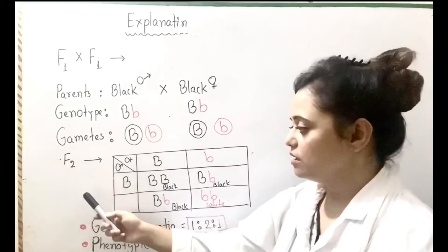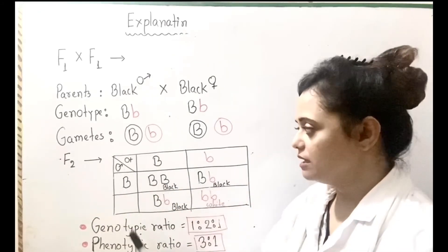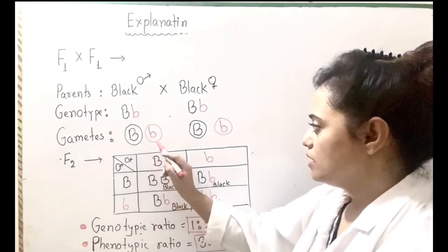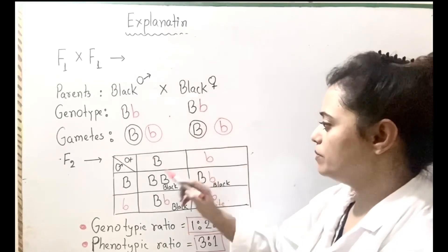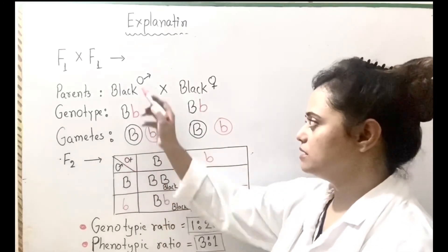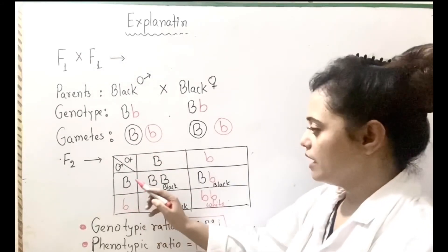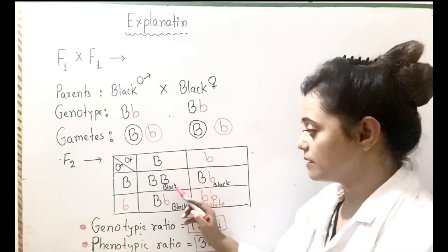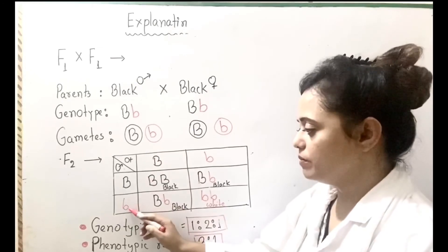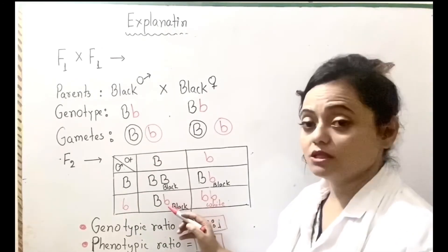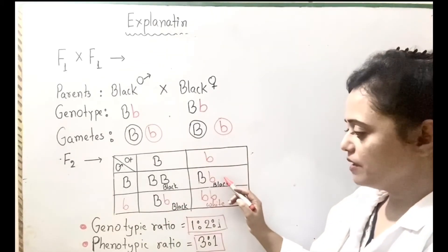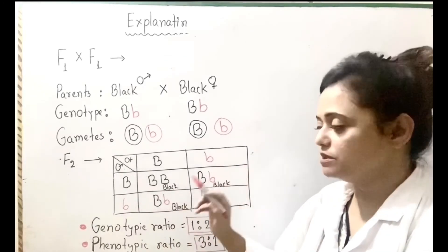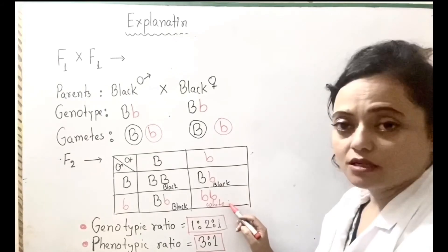During the F2 generation, draw a checkerboard like a Punnett square and put the gametes there. The female gametes are capital B and small b; the male gametes are capital B and small b. Crossing them: capital B capital B gives homozygous black; capital B small b gives heterozygous black; and small b small b — both recessive genes — gives white-colored guinea pigs.